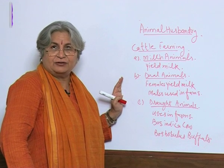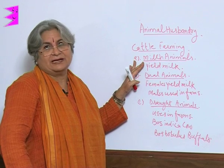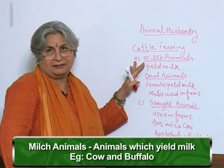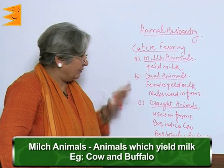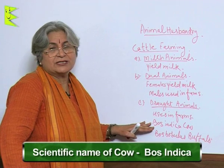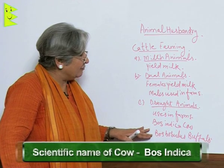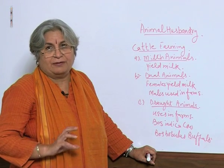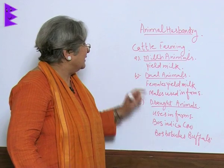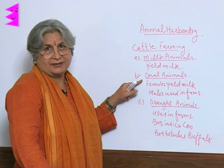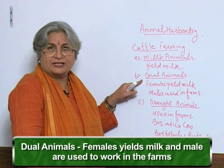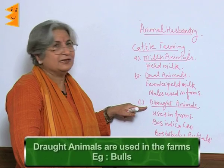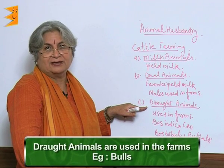Cattle are classified into three categories. First are milk animals — those which yield milk, like cow and buffalo. The scientific name of cow is Bos indica, while that of buffalo is Bos barbulus. Then there are dual animals, where the female is used for giving milk and the male is used in the farm. Draft animals, like bulls, are used only in the farms.